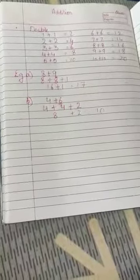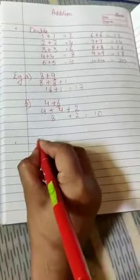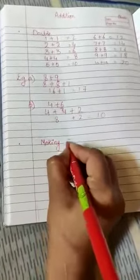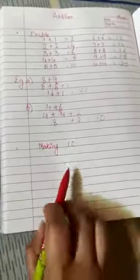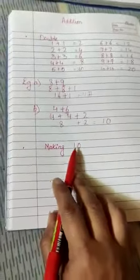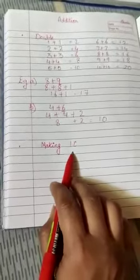Now our next way of adding is making 10. It's very easy to add 10 to a given number because the last digit remains the same. Only there is change in tens place. It's very easy.